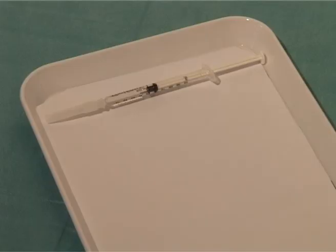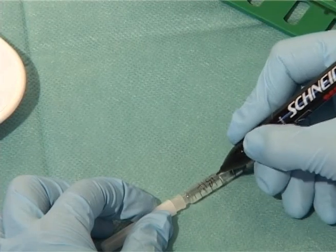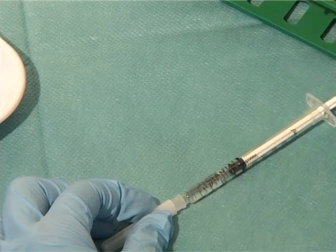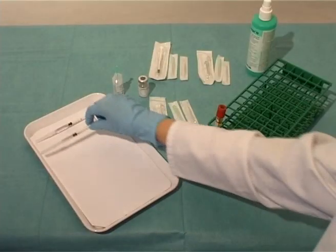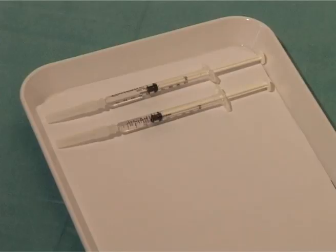Then, the positive control injection is prepared. About 150 to 200 µL of histamine solution should be drawn. The histamine solution should be suitable for intercutaneous testing and should contain 0.1 mg per mL of histamine.